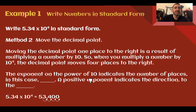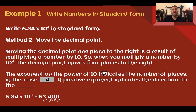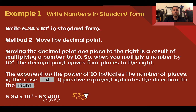The second method is to move the decimal point — this is the way I do it most of the time because I find it faster. Moving the decimal point places to the right is a result of multiplying the number by 10. When you multiply by 10 to the 4th, you just move the decimal point four places to the right. So 5.34 times 10 to the 4th: we move the decimal one, two, three, four places. Any gaps fill in with zeros, then add commas for place value — giving us 53,400.